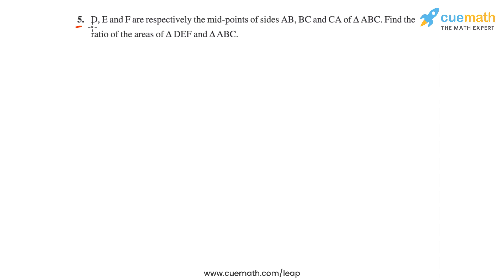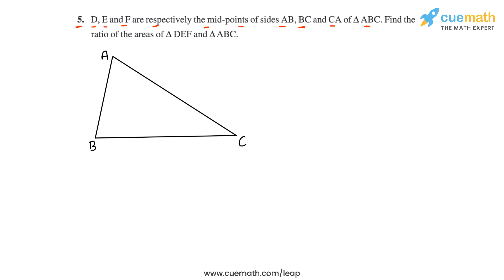Question 5 of this exercise says D, E and F are respectively the midpoints of sides AB, BC and CA of triangle ABC. Let's draw a figure corresponding to this statement. Here's an arbitrary triangle ABC. D is the midpoint of AB, so D would be here. E is the midpoint of BC, so E would be somewhere here. F is the midpoint of CA, so F would be here. Now we have to find the ratio of the areas of triangle DEF and triangle ABC. Let's complete triangle DEF by joining D, E and F.